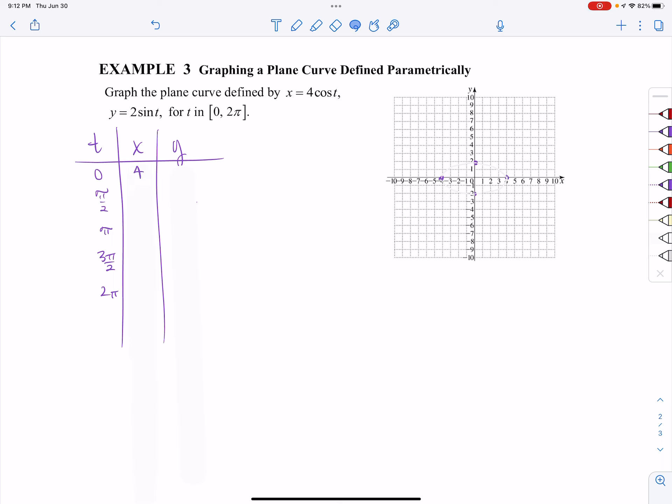So for my x equation, 4 times cosine of 0 is 4 because cosine of 0 is 1. 4 times the cosine of pi over 2 is 0, etc. You can take the time to plug each one of those in. And then for my y's, 2 times the sine of 0 is 0, 2 times the sine of pi over 2 is 2 times 1, which is 2, etc.